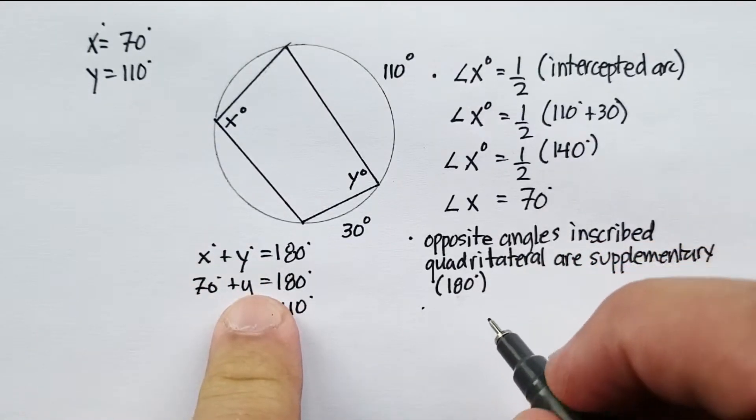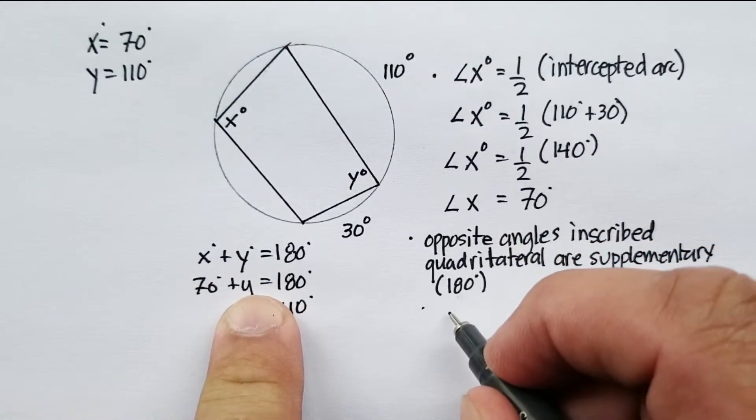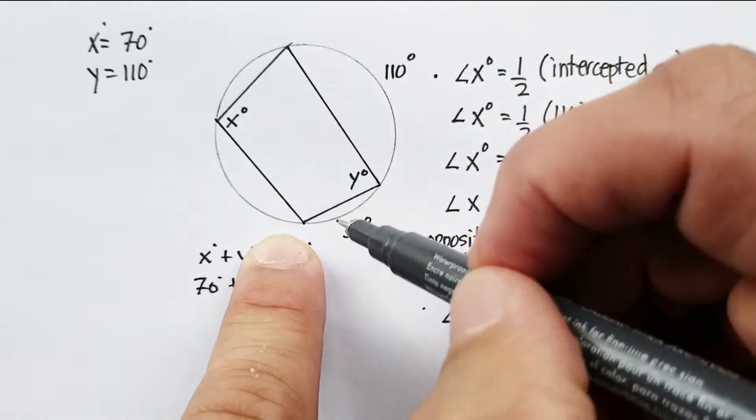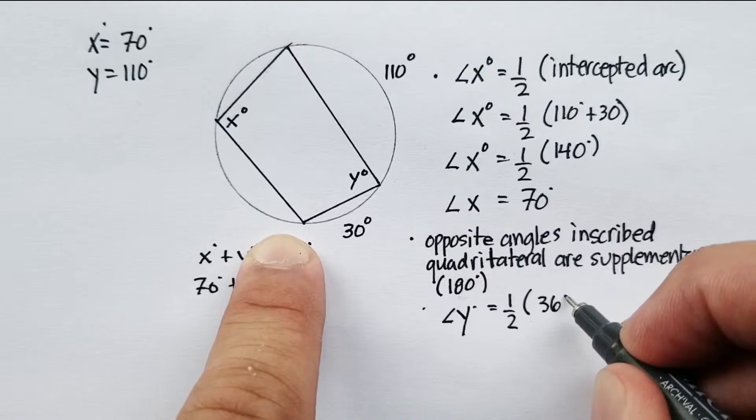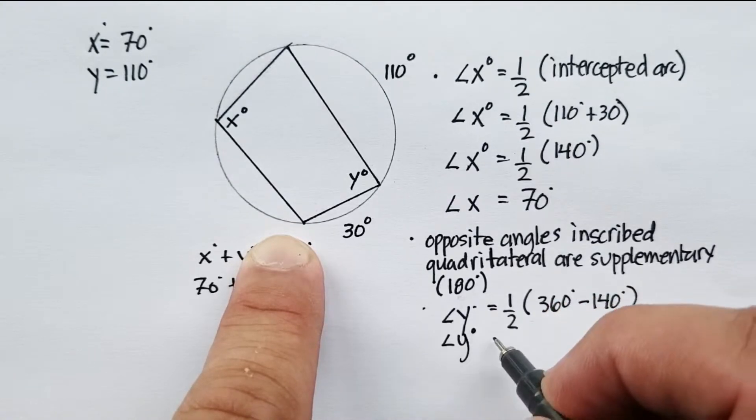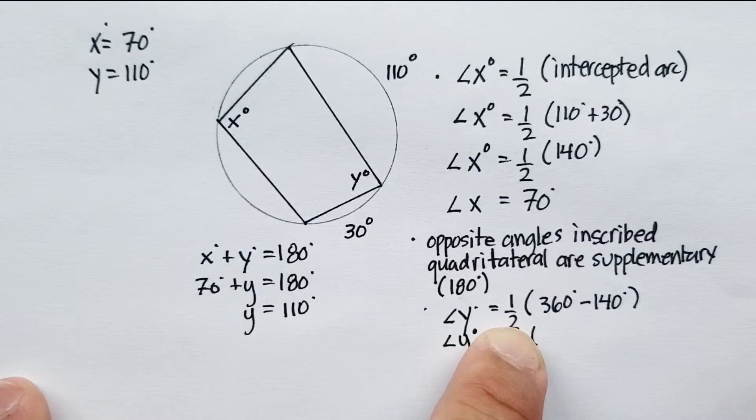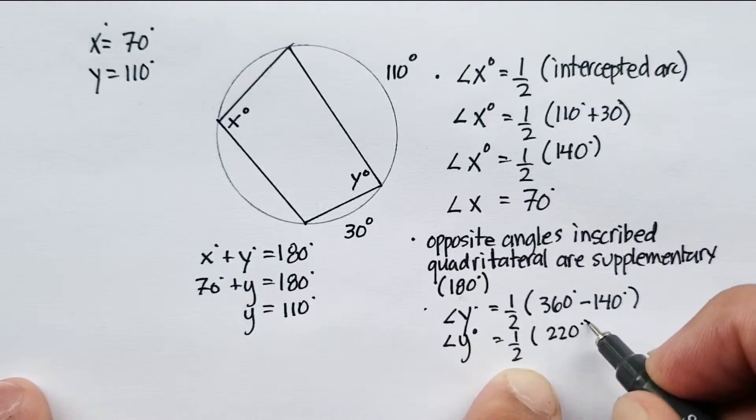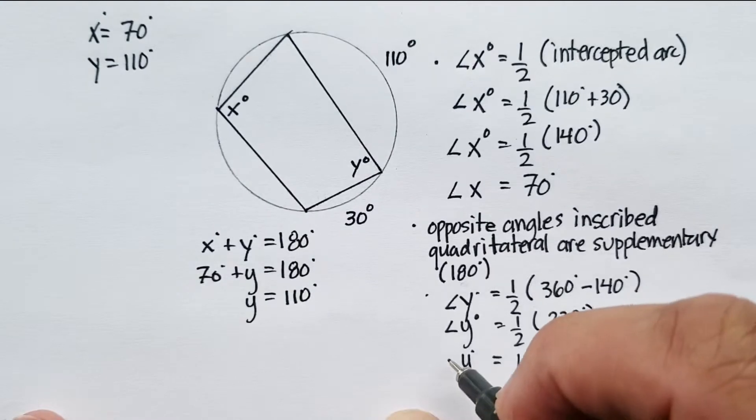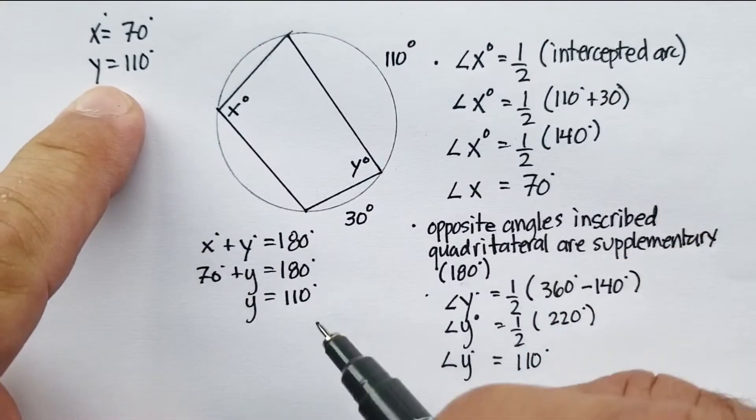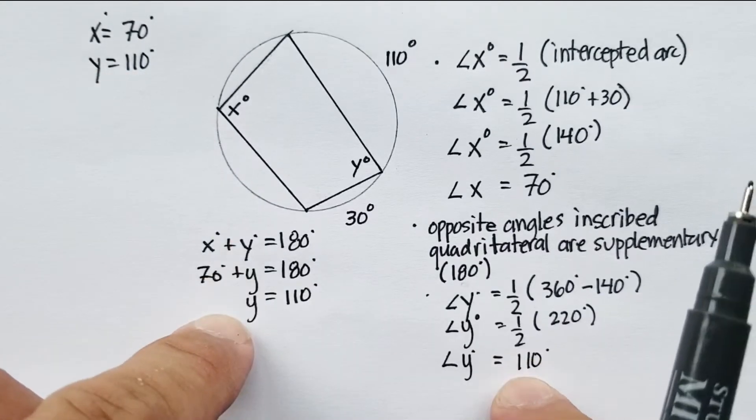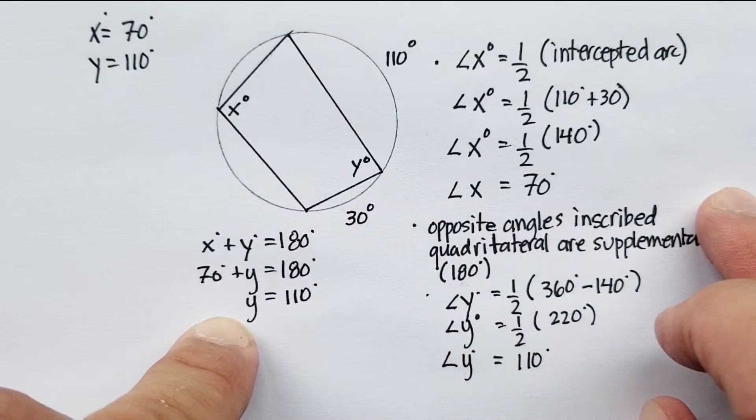So, we know that angle Y should be equal to one-half this intercepted arc, which is 360 minus 140, which means that angle Y is equal to one-half. 360 minus 140 is 220. Half of 220 is equal to 110 degrees. And sure enough, that's what we discovered by using this formula over here. So this and this actually turn out to be the exact same information, and you could have gone either way to figure that out.